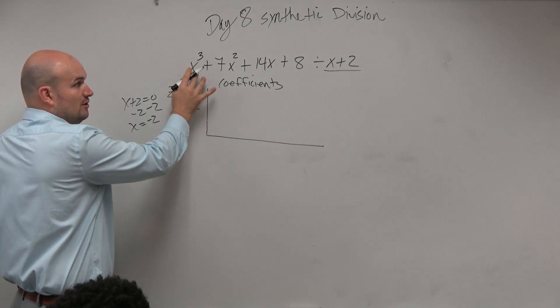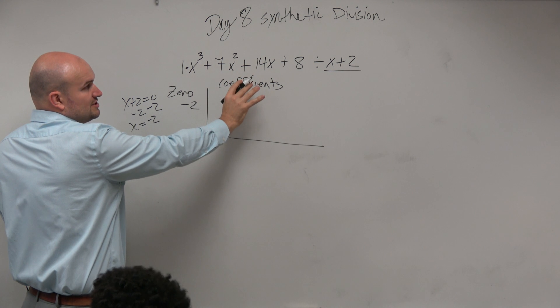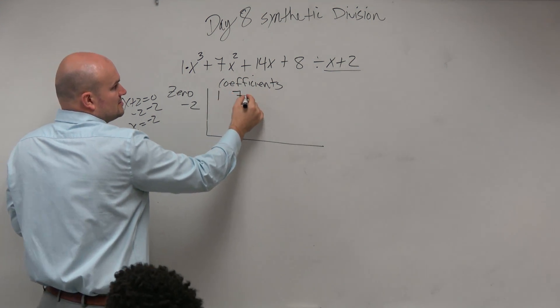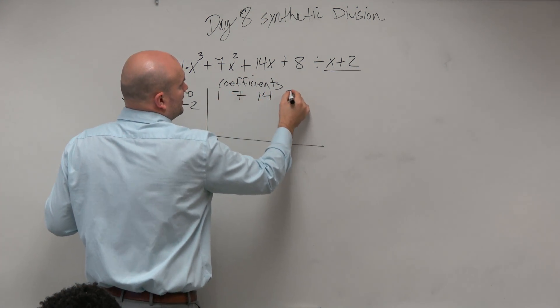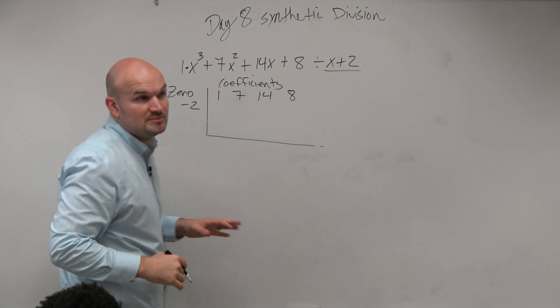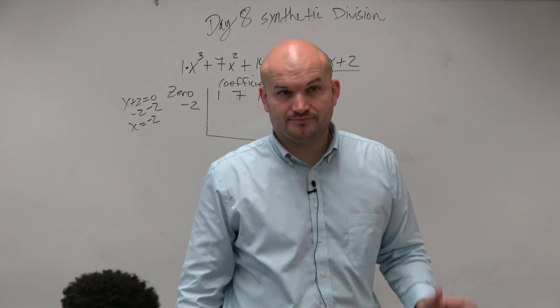Now we take the coefficients of our dividend. So it's going to be 1, 7, 14, and 8. There are no missing terms, so I don't need to include a 0 placeholder at all.